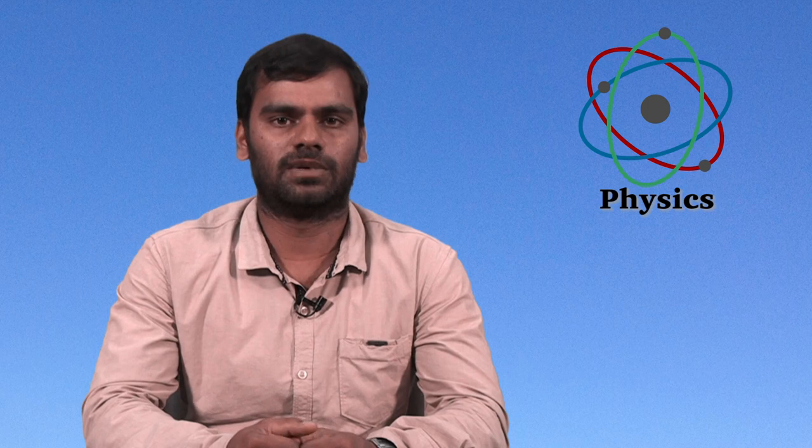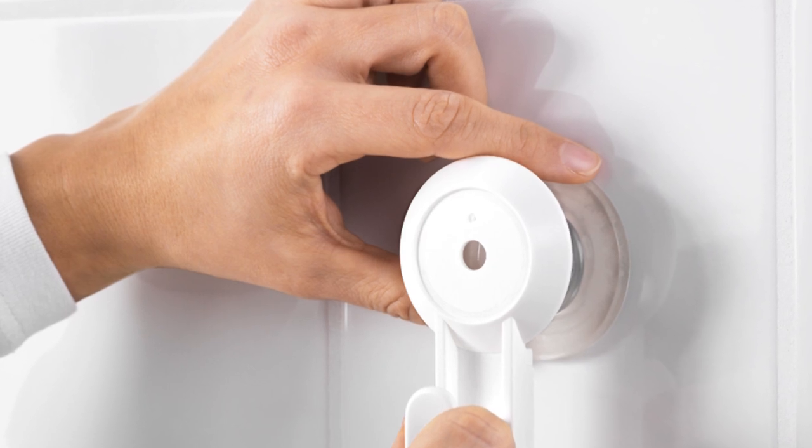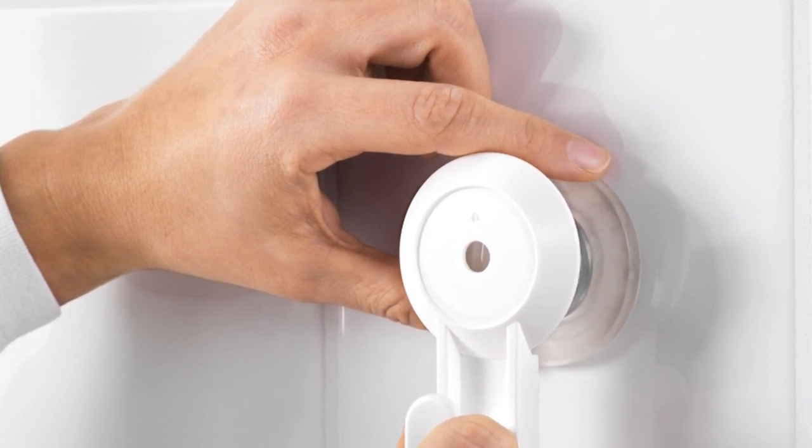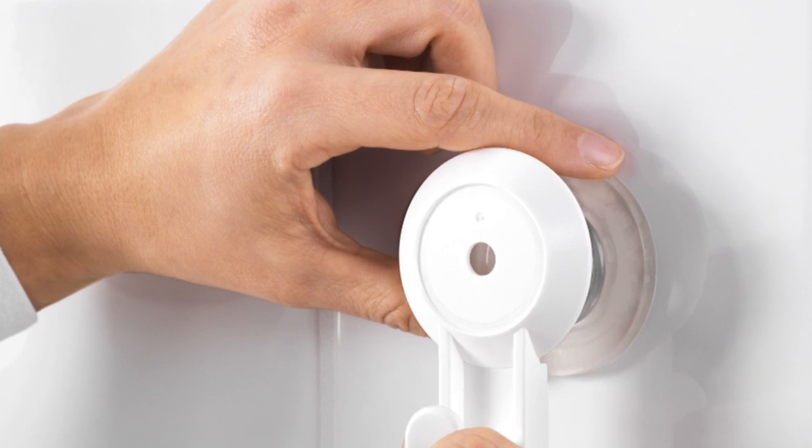Some of the other examples for atmospheric pressure are fixing rubber suckers on polished surfaces. When we put rubber sucker on a smooth surface, air in the rubber sucker is forced out. It will lead to have low pressure in between the surface and the rubber sucker.